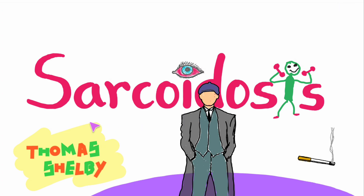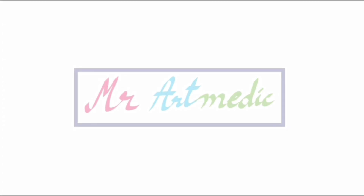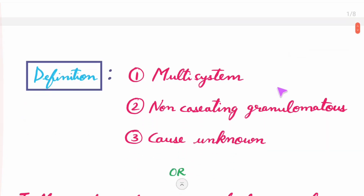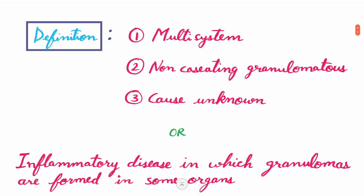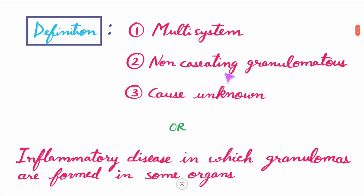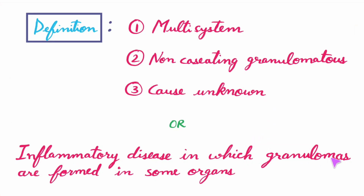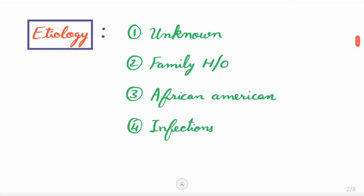Sarcoidosis is a multi-system disease in which you can see non-caseating granulomas. The cause of the disease is mostly unknown. It is an inflammatory disease in which granulomas are formed in some of the organs, especially the lungs. Causes include unknown etiology, family history, and African-American people are at higher risk.